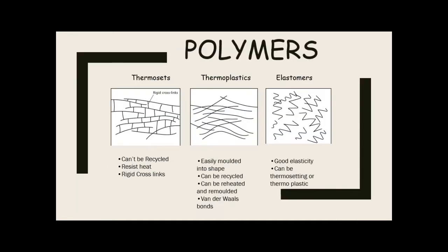Although I mentioned four groups of polymers, typically the answer is three — the fourth is a newer, more modern one we'll talk about in a moment. So the three main groups are thermosetting plastics, thermoplastics, and elastomers.